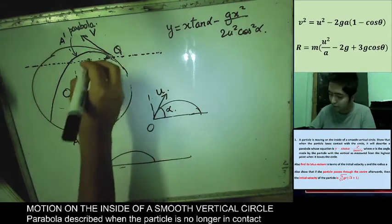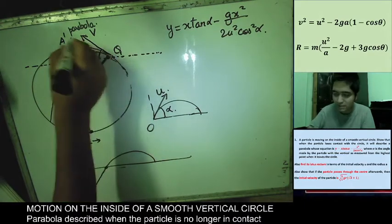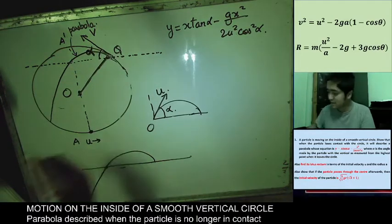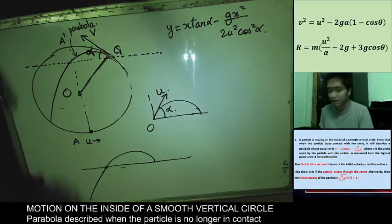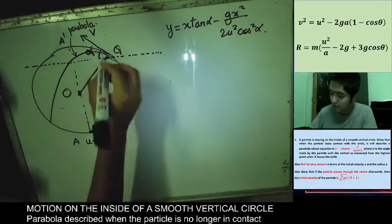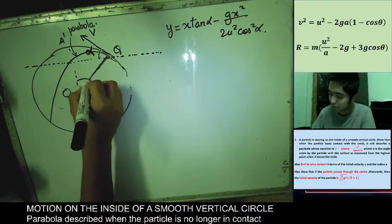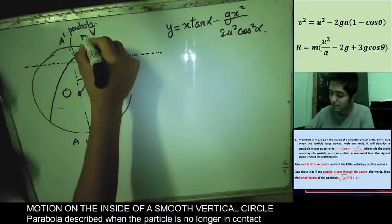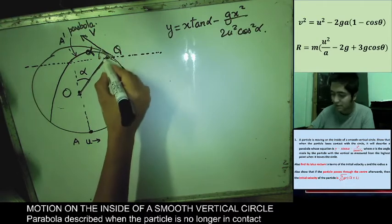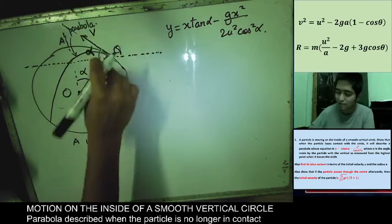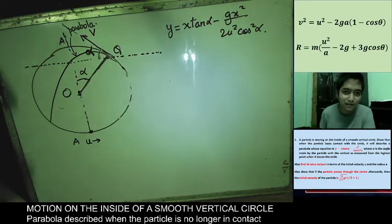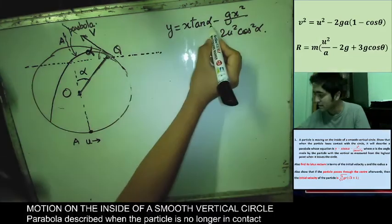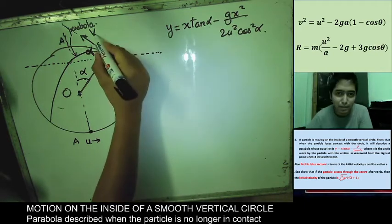Similarly here, we take α as the angle of projection at Q, but instead of U we now use V. If the angle that OQ makes with the vertical is α (as measured from the highest point), it can be shown — using the fact that the velocity is perpendicular to the radius — that this angle α and the angle of projection are both equal. We denote both as α.